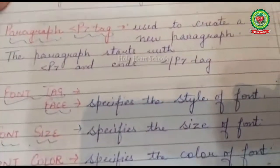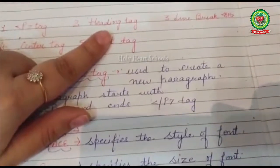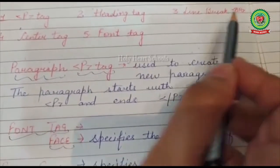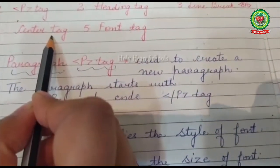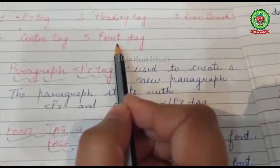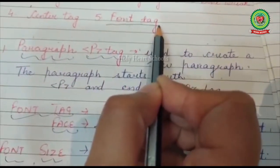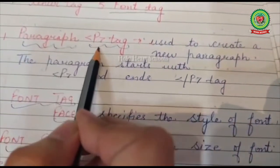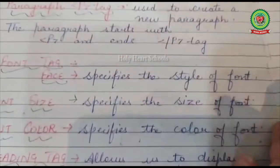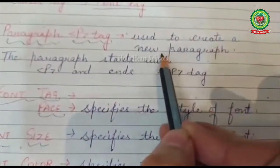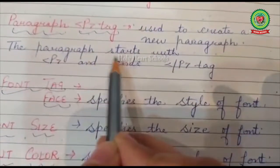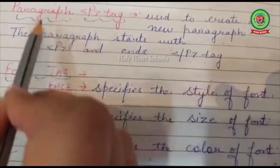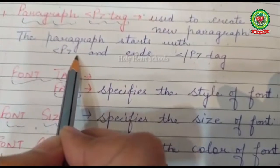Today we will discuss the p tag, the heading tag, the line break tag used to break a line, the center tag to align text to the center, and the font tag to apply various formatting effects. We start with the p tag, which stands for paragraph. It is used to create a new paragraph. The paragraph starts with the p tag and ends with a closing slash p tag.